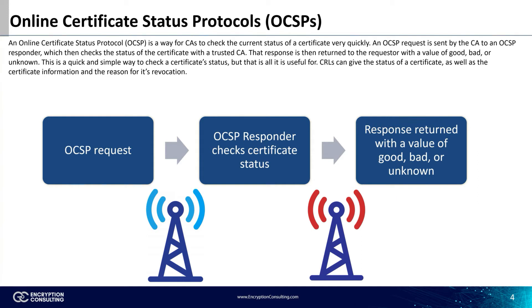Another way to check the status of a certificate is with an Online Certificate Status Protocol. The way OCSP works is a CA sends out an OCSP request to an OCSP responder. That responder checks the certificate status with the issuing CA and returns a value of good, bad, or unknown. This is a great way to get the current status of a certificate, but you don't get all the certificate info like you did with a CRL.